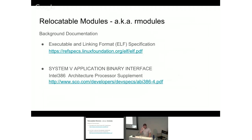On to relocatable modules, which other people requested I talk about. Basic background is that you need to be familiar with ELF, because that's what we use for all our builds. The other helpful thing is the System V Application Binary Interface for at least 386. Every other architecture has their own supplement to their ABI, except for RISC-V — I think they still need to add one.